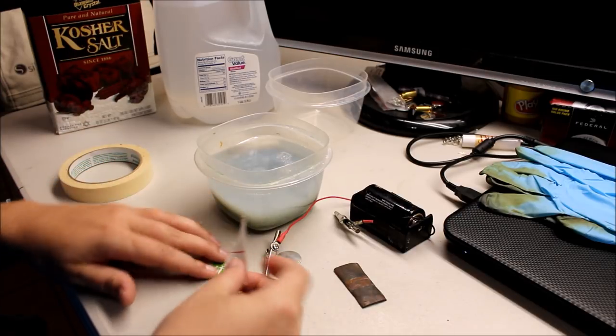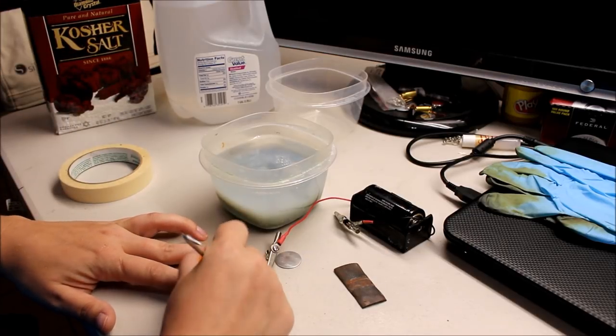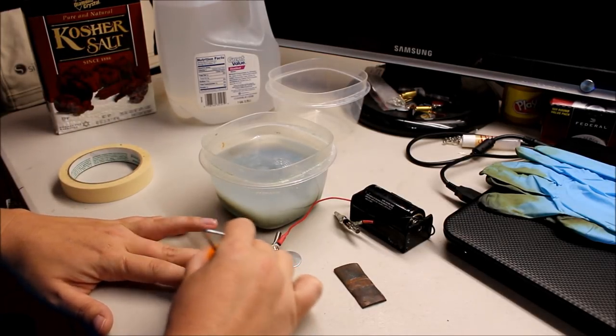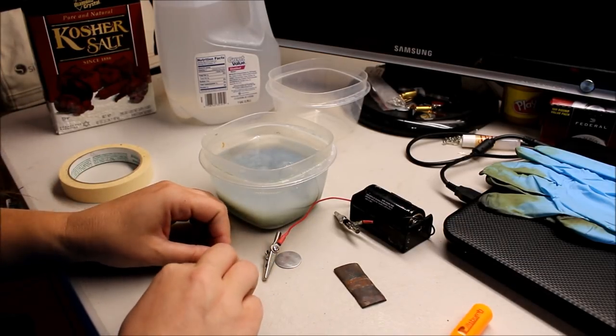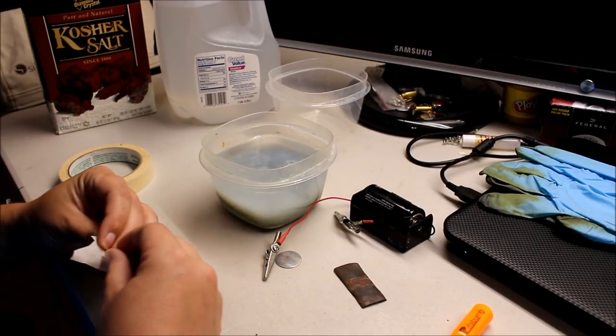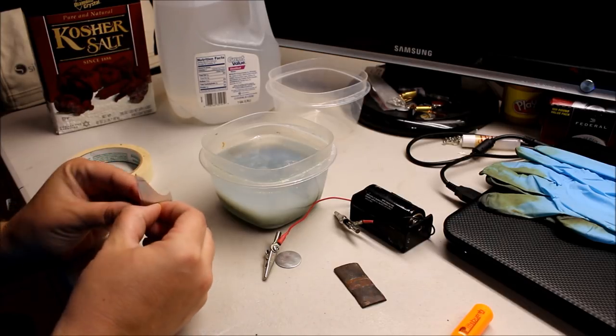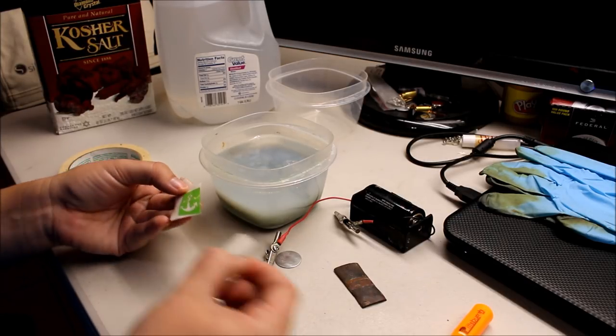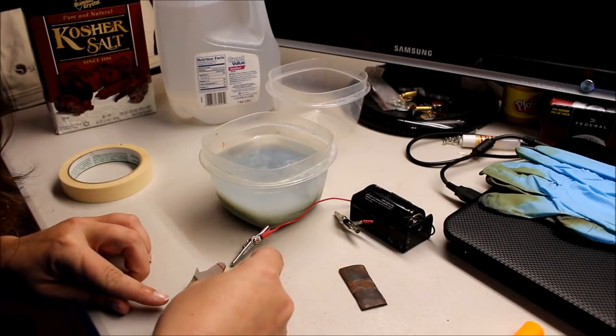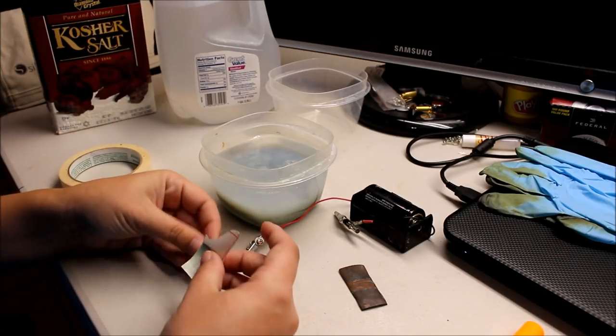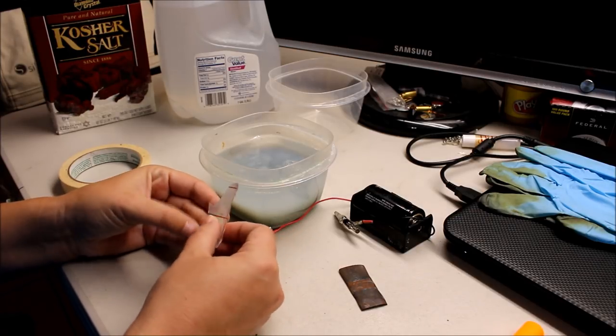So what we'll do is take our transfer tape. I have a small piece of transfer tape, put it on, rub it real well, get it stuck to it real good. It's just like a sticker. Find our placement, and this is aluminum by the way.